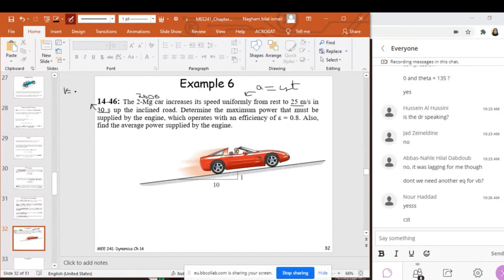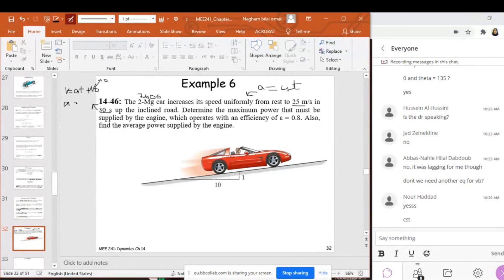From this, I can find a directly because I know that v equals at plus v₀ in uniformly accelerated motion, which is our case. v₀ is 0 and v is 25, so a equals 25 over 30 seconds, which is about 0.8 meters per second squared.